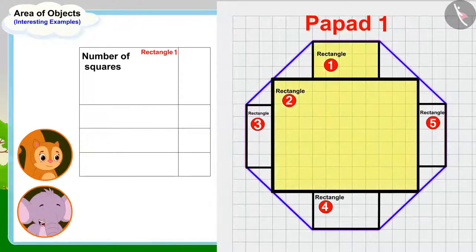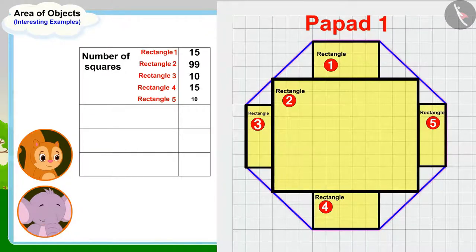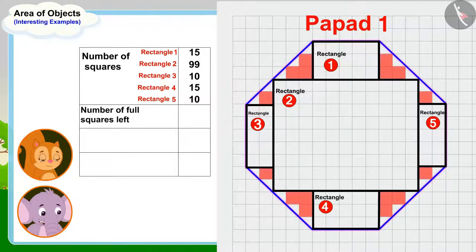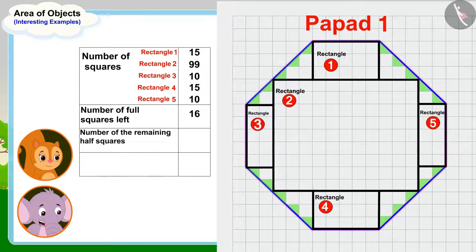Now, I will write down the number of squares that fall into these rectangles. Now, I will write the number of full squares left, 16. And finally, the number of the remaining half squares, 20, which is equal to 10 full squares.